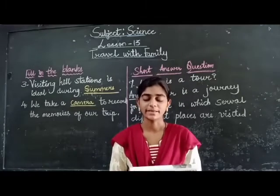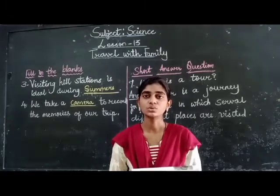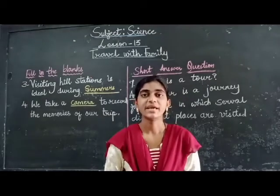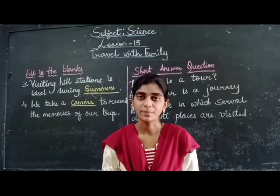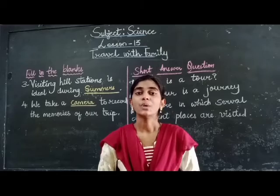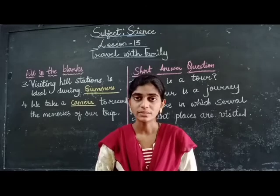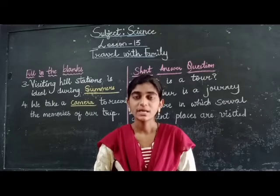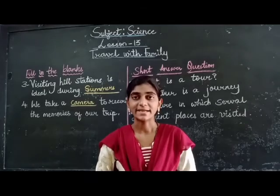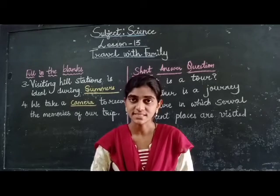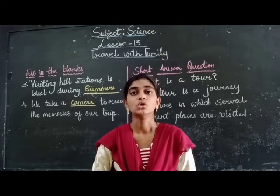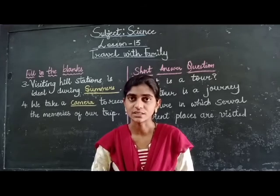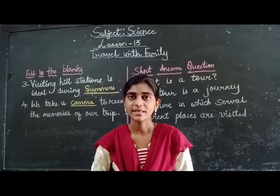You have to write a short paragraph about a tour — where you went, how you reached there, what mode of transport you used, where you stayed, and what activities you did. By this we have completed our workbook part also. Complete all the work given in the workbook and be thorough with this lesson. In the next class we are going to read the next lesson. Thank you.